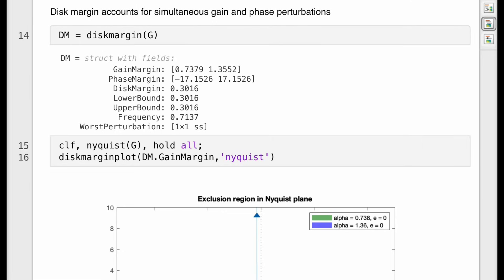But one thing to note quickly is that this is showing that the disk gain and phase margins are only about 1.3 and 17 degrees respectively, which aligns with our experimental results. So it's much less than were reported with the classical gain and phase margins.